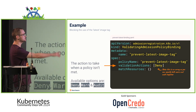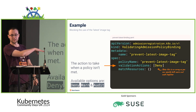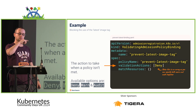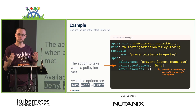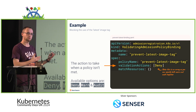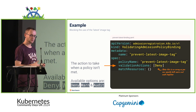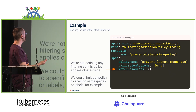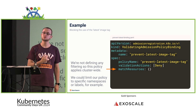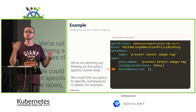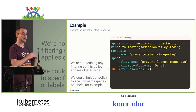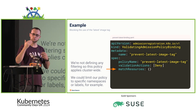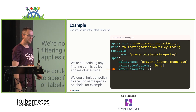Then we have validation actions — an array. The values can be deny, warn, and audit. Deny implicitly does audit anyway. Audit creates a record in the Kubernetes audit log. Deny blocks the action. Warn shows an error to the user but won't prevent the action — it's a way of easing into a policy, so you can start with warn to clean things up before enforcing deny. Then we have match resources defining what to apply this policy against. By default, if you don't define anything, it's cluster-wide. You can use various selectors to target specific namespaces or labels.